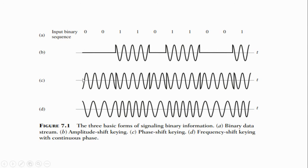Next is frequency shift keying. In frequency shift keying, the frequency of the carrier signal is varied according to the binary data. There are two frequencies used: F1 is the high frequency and F2 is the low frequency. When signal 0 is transmitted, the F2 frequency signal is transmitted. When signal 1 is transmitted, the F1 frequency is transmitted.